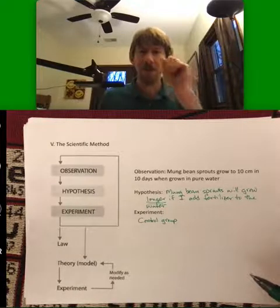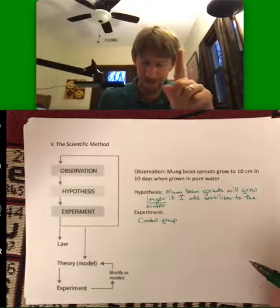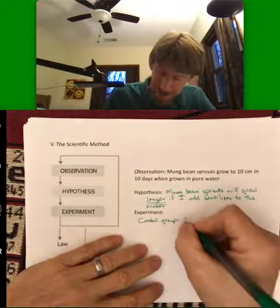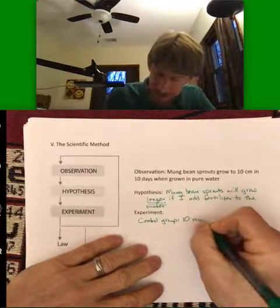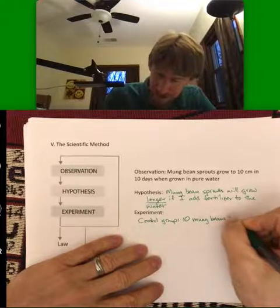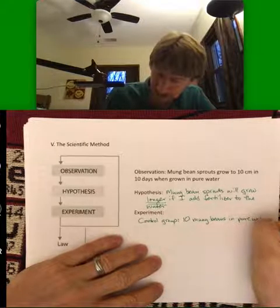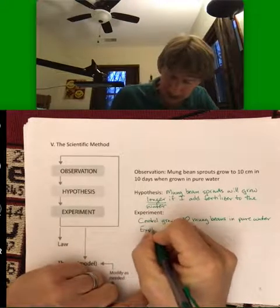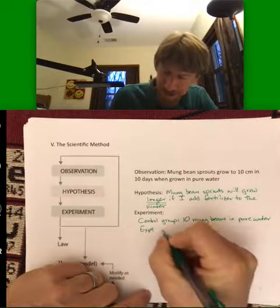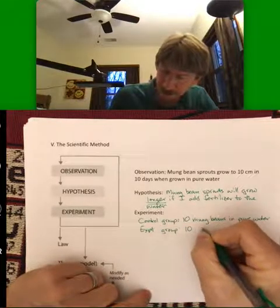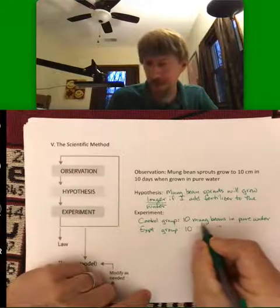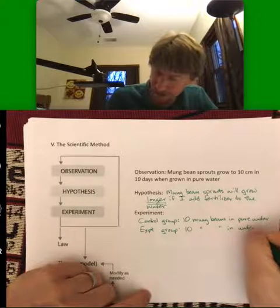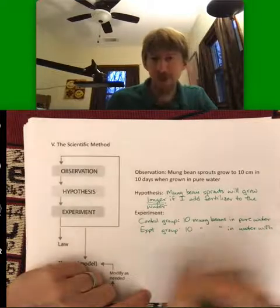And good experiments only ever change one thing. So we'll have a control group. And the control group will be 10 mung beans in pure water. And then the experiment group, I'll abbreviate experiment EXPT. Experiment group. We have 10 mung beans, and these are ditto marks, meaning that right above it is the same thing. So 10 mung beans in water with fertilizer added.